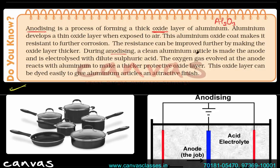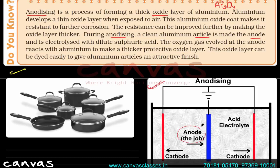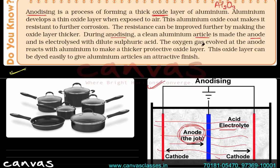Anodizing is an electrolytic process. During anodizing, aluminum is made the anode and it is electrolyzed using dilute sulfuric acid as the electrolyte. Oxygen gas is generated at the anode, and this oxygen reacts with the aluminum surface to form a thick oxide layer.